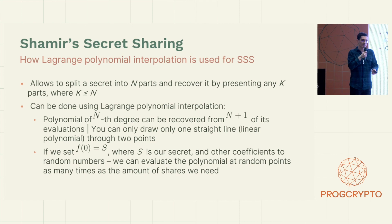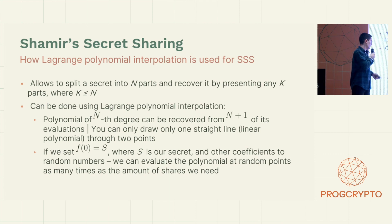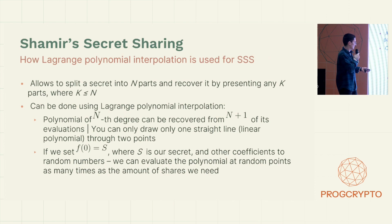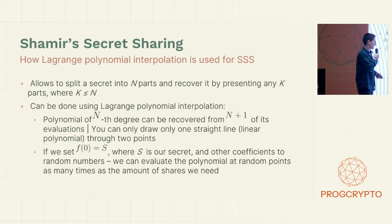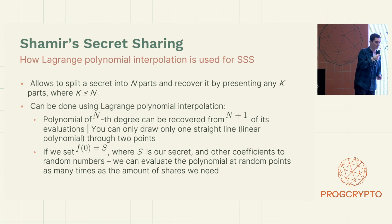Simply said, you can only draw one straight line — a linear polynomial — through two points. So if you set F(0) equal to S, where S is our secret, and set the other coefficients to random numbers, we can evaluate the polynomial at random points as many times as the number of shares we need.